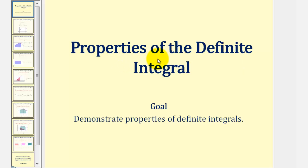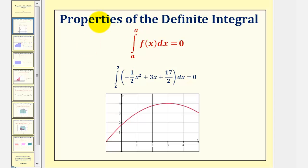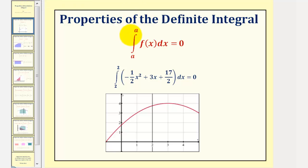Welcome to a lesson on the properties of the definite integral. In our first property, we have the integral of f of x from a to a equals zero. Notice in this case, the lower limit of integration and the upper limit of integration are the same, and therefore the interval of integration has a width of zero, making this equal to zero.